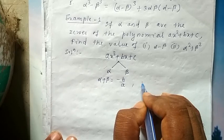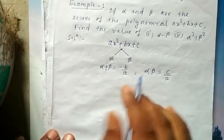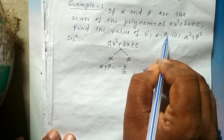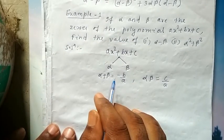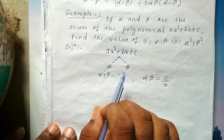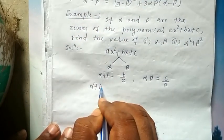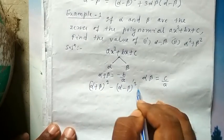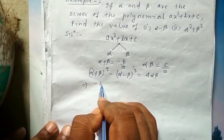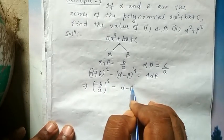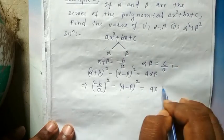The product of zeros αβ is equal to c/a. We are given to find α-β. For α-β, you need to apply the appropriate formula. You see which formula is applicable here to find α-β. I think this formula is applicable: (α+β)² minus (α-β)² = 4αβ. That implies, in place of α+β you can substitute -b/a, so (-b/a)² minus (α-β)² is equal to 4 times c/a.